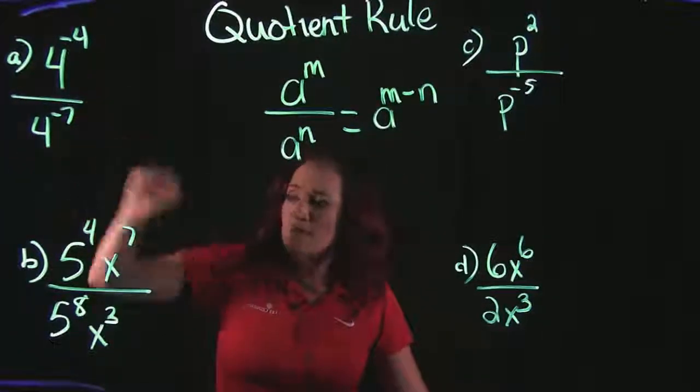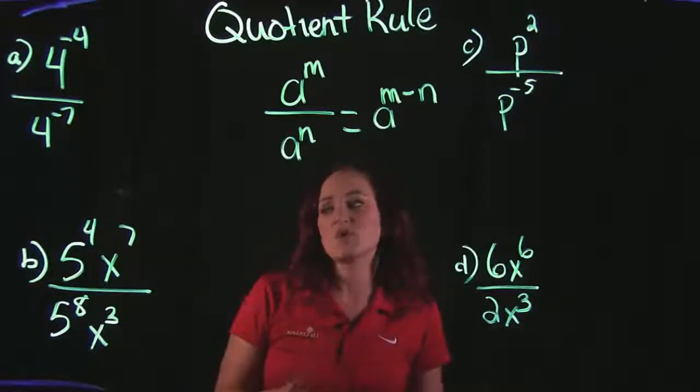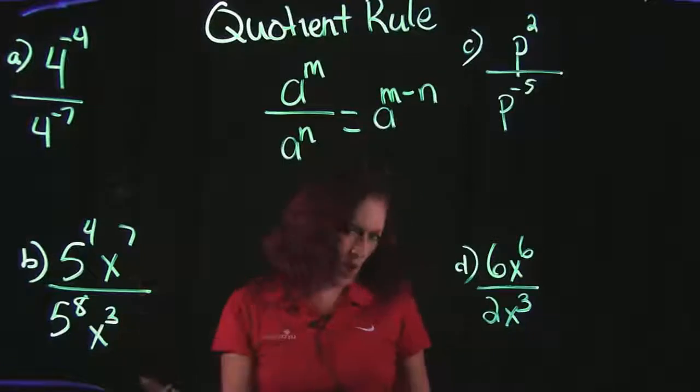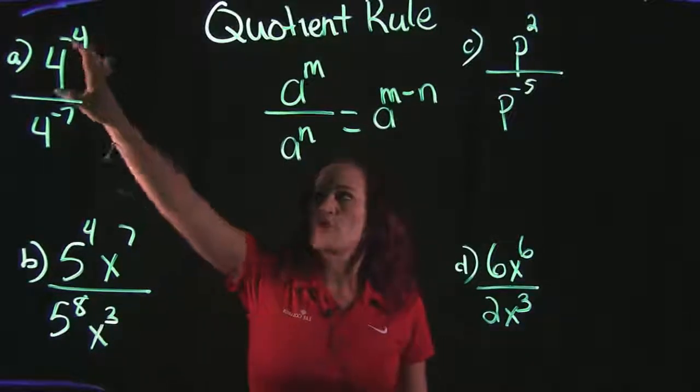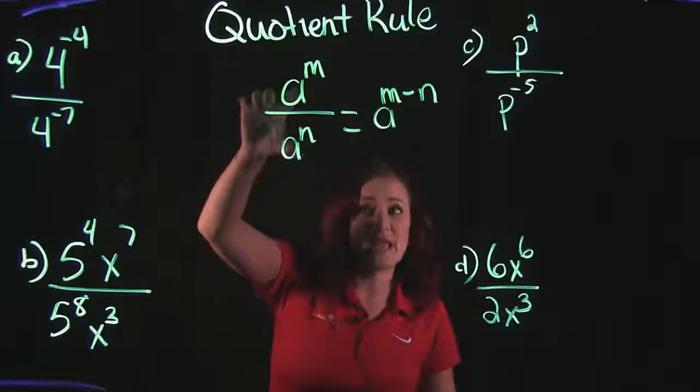So a^4 being divided by a^4, an x being divided by an x. You can't use the quotient rule to divide an x by a y or something like that, or a 4 divided by a 7. They have to have the same base.